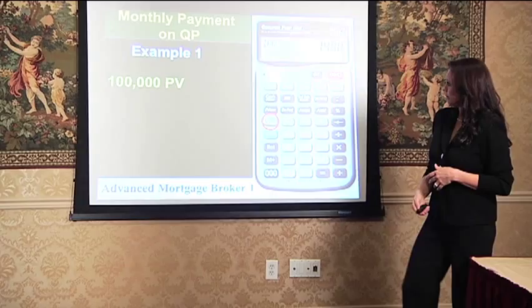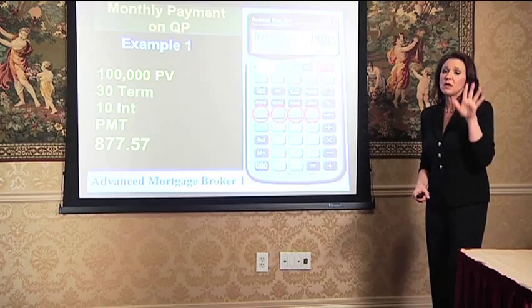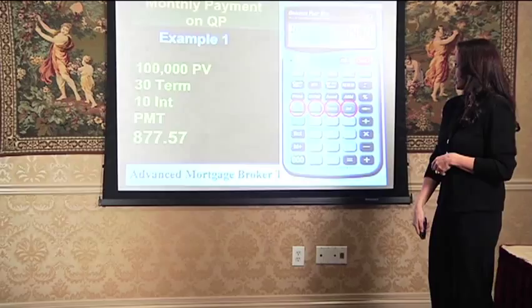So we've got 100,000 present value, 30-year term, 10% interest — payment of 877.57. If at any time you get a different answer, you've got something stuck in the memory and you've got to clear it out. You're going to do Shift and Clear All, which is your multiply sign, and that's going to clear out everything.